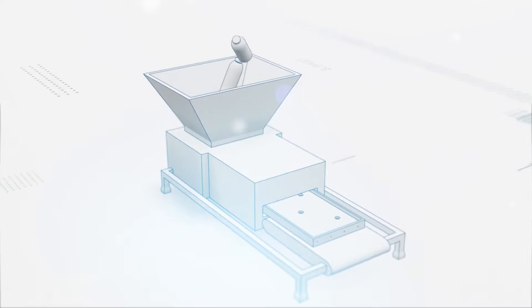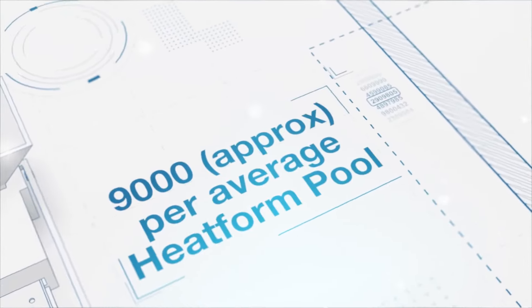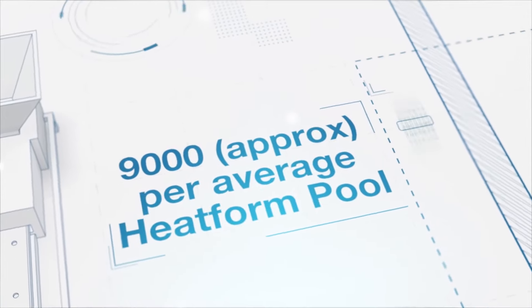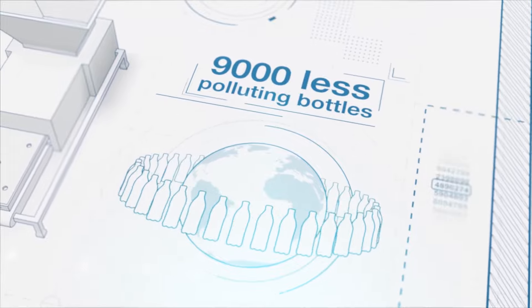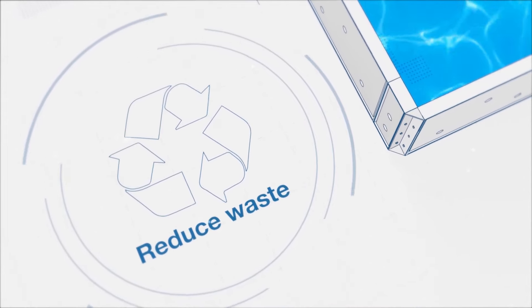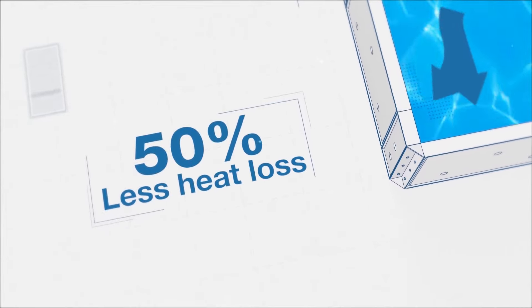All the panels which make up the pool are insulated with 100% recycled plastic bottles with approximately 9,000 used in an average Heatform pool. That's 9,000 less polluting our planet and oceans and this will not only reduce waste but will actually improve heat retention through the insulated walls.